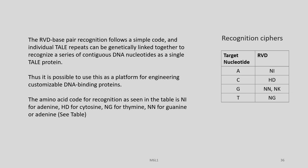The RVD base pair recognition follows a very simple code, and the individual TAL repeats can be genetically linked together to recognize a series of contiguous DNA nucleotides as a single TAL protein. Thus, it is possible to use these as a platform for engineering customizable DNA binding proteins. The amino acid code for recognition: NI for A, HD for C, NG for T, and NN or NK for G.